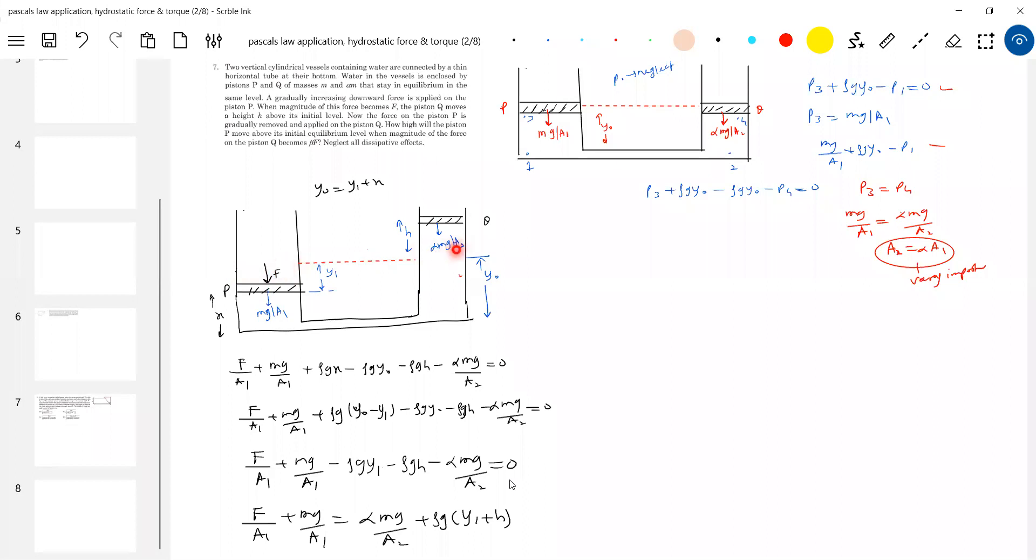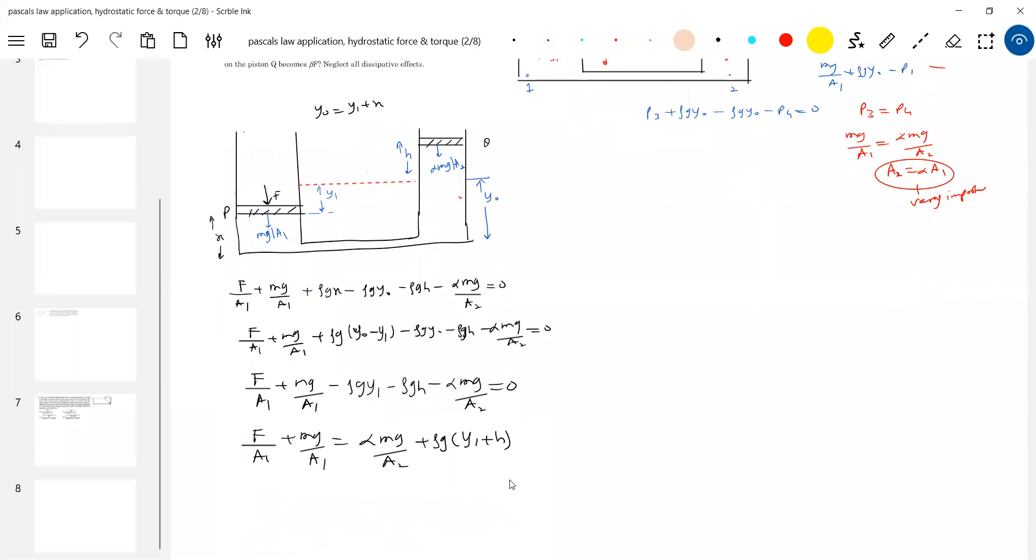Therefore A1Y1 should be equal to A2H. Fine. That is one more observation to make it. So here A1Y1 should be equal to A2H. So I will replace now Y1 with the help of this particular formula. I think we will start giving numbers. It will be easy for us. Put 3 in 2 then eliminate Y1. Because Y1 is what we assumed. I will eliminate Y1.